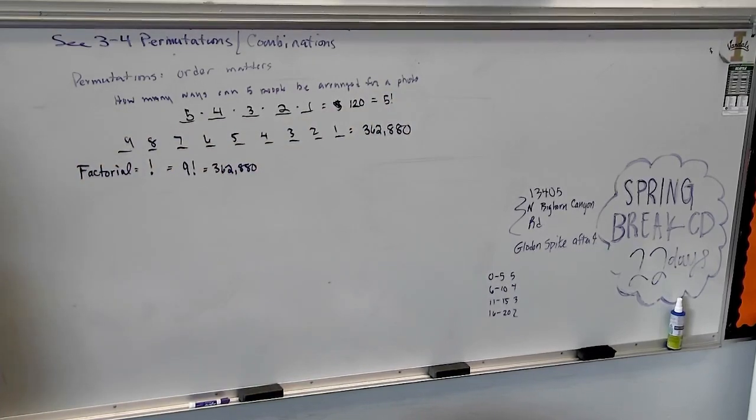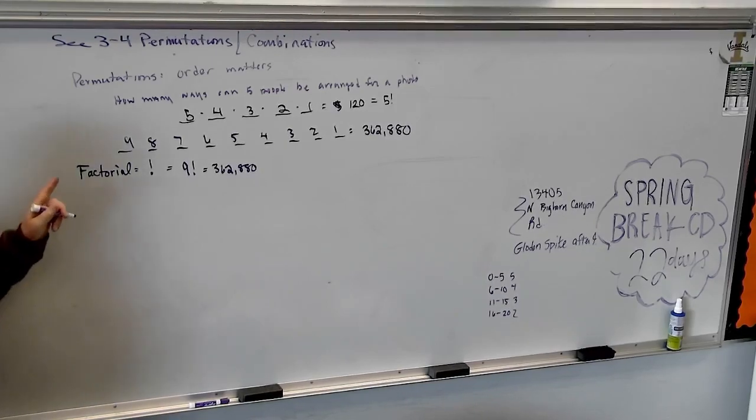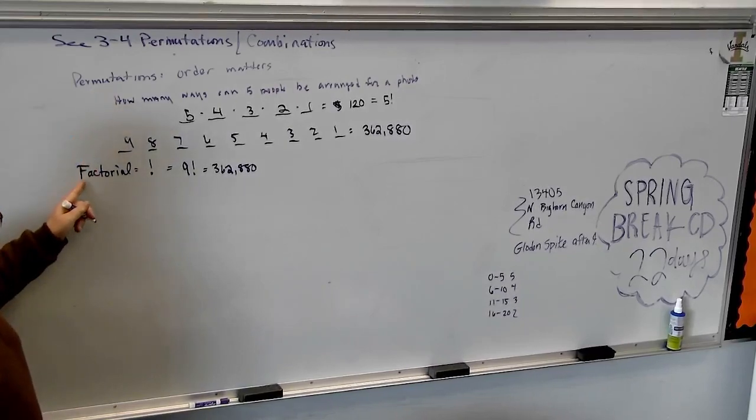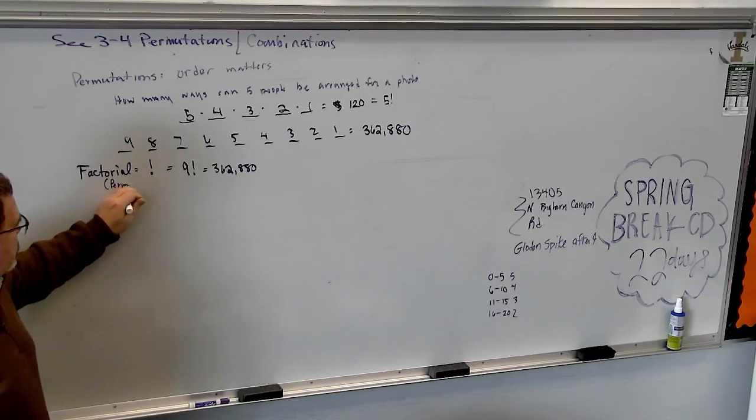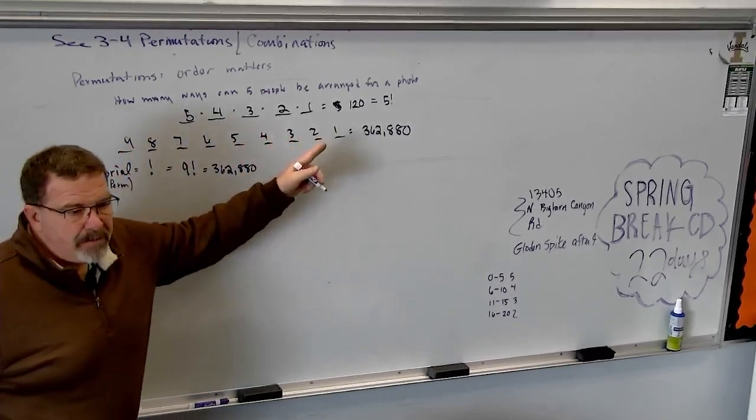That button on your calculators, let's do the graphing calculators first. Type in nine. You always type in the number first. And then go to math. Do you see to the far right PRB? Go to PRB. And I believe it's line four. Because you'll see an exclamation point. Press enter. So on your screen, it should say nine factorial. Press enter. Factorial is a permutation. Order matters.